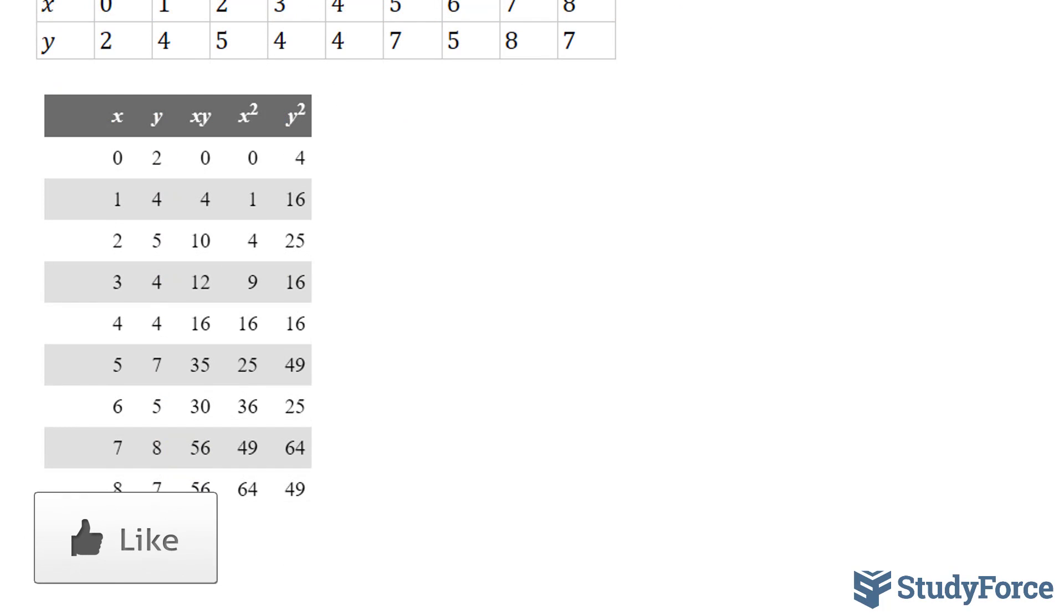The next step is to sum up all of the columns. So let's go ahead and do that. 0 plus 1 plus 2 is 3, 6, 10, 15, 21, 28, and 36. So this is equal to 36.